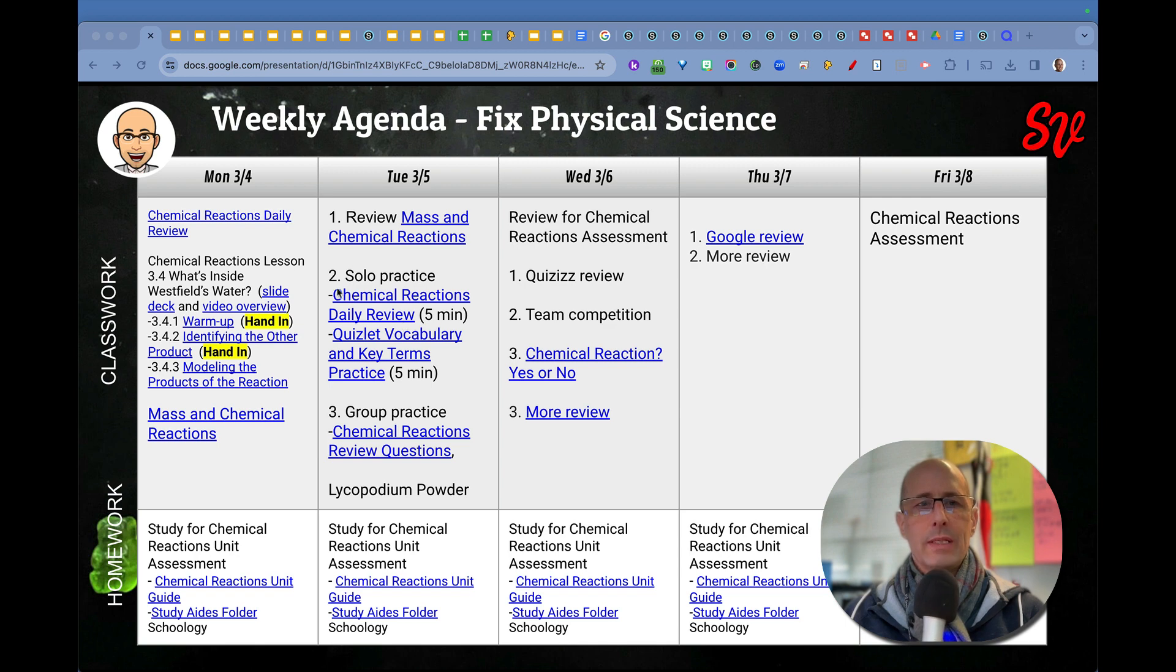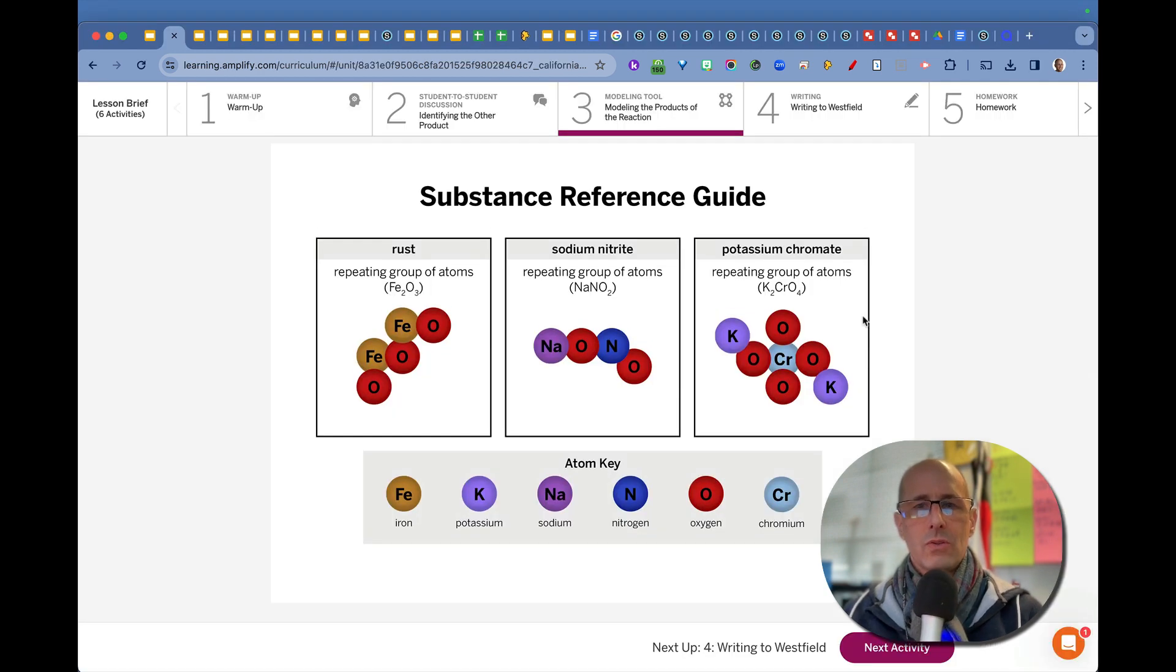This week we did the last lesson in chemical reactions unit. We did lesson 3.4, what was inside the Westfield's water. Students had to eventually determine what besides rust was produced in the water in Westfield. They had to choose from sodium nitrite and potassium chromate, and eventually they determined it was sodium nitrite because the fertilizer had N atoms and NA atoms for their atom group.